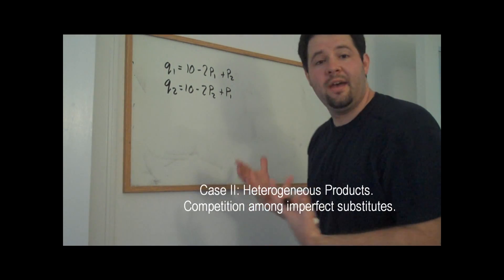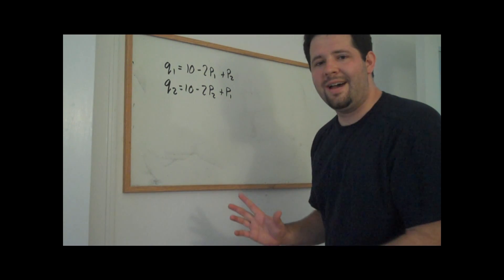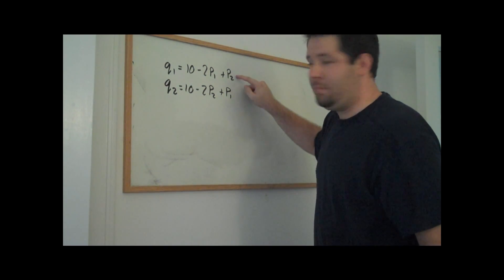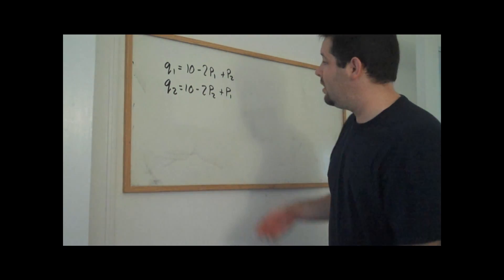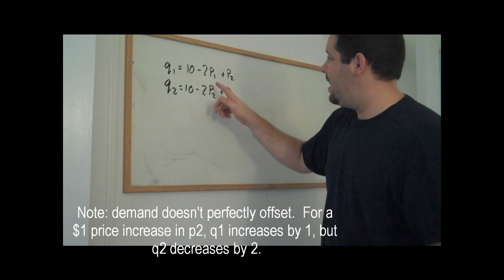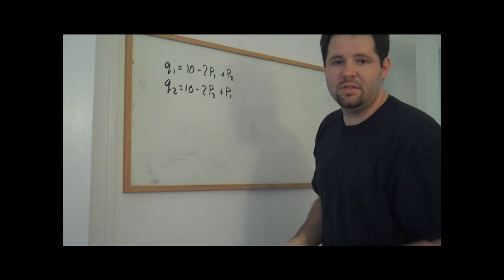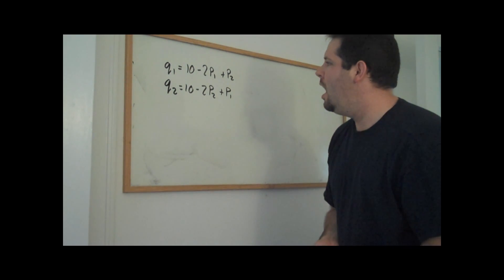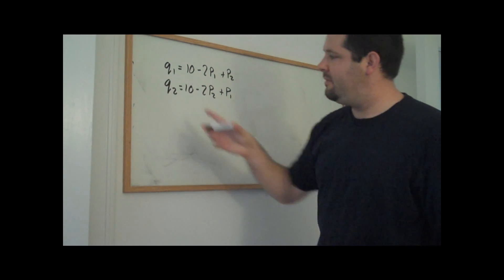So here's an example where we have demand curves for competing products. But these products are not identical. So if firm two raises the price, there's going to be a greater demand for firm one's product and vice versa. And the law of demand, holding constant other prices, also holds in this case. So this is about the simplest case that we could consider. So we have these two demand curves for firm one and for firm two.